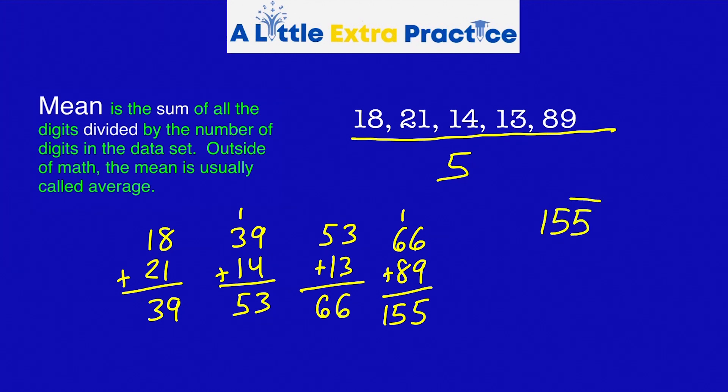I'm going to use the partial product method. What times five is almost 150? Five times three is 15. Five times 30 would be 150. Subtract. I'm going to bring that down. Five. Five times one is five. The average is 31.